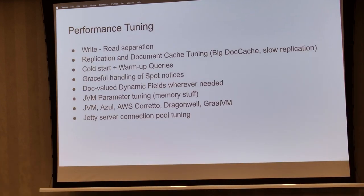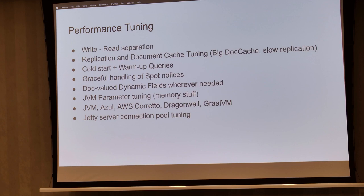There were performance tuning steps needed to get this running. First was read-write separation: we wanted the master solely for handling updates and slaves for all read operations. Whenever an auto-commit happens, the document cache is flushed. We wanted a big document cache, but that would increase latency longer until the cache fills up. So we went for a slower replication strategy — slaves replicate once every two hours — which became part of our SLA.